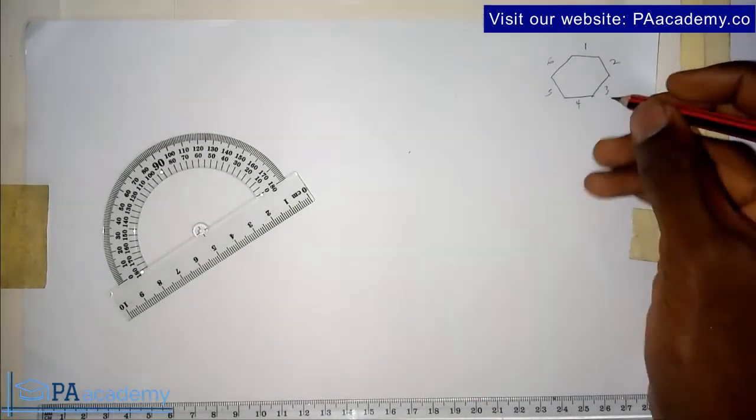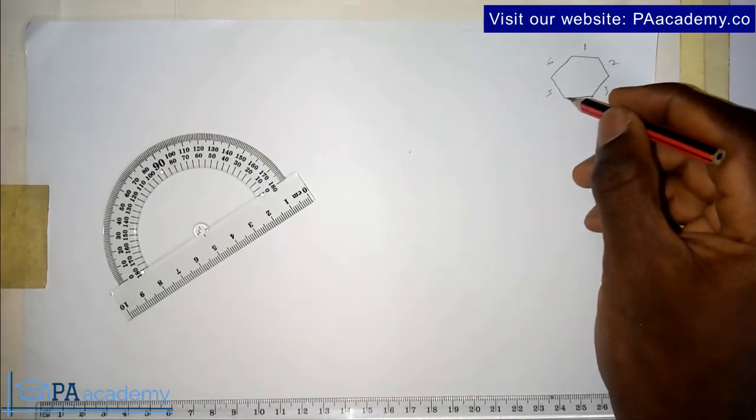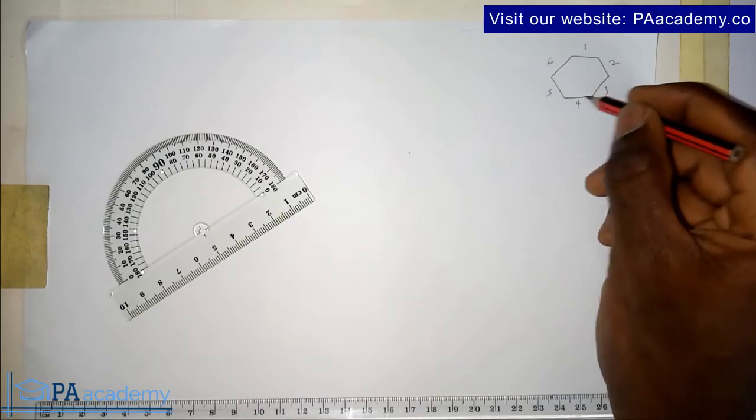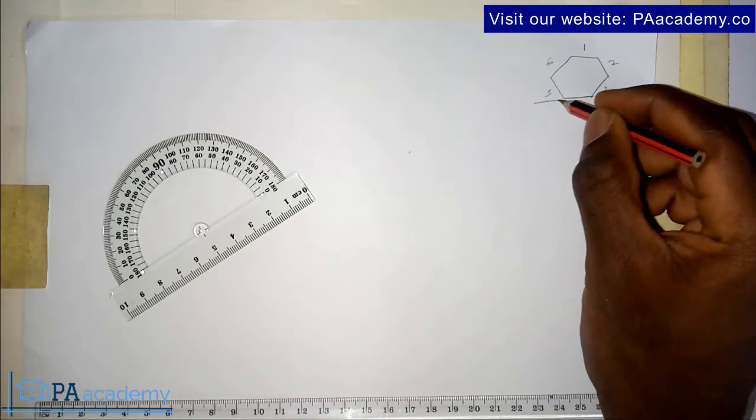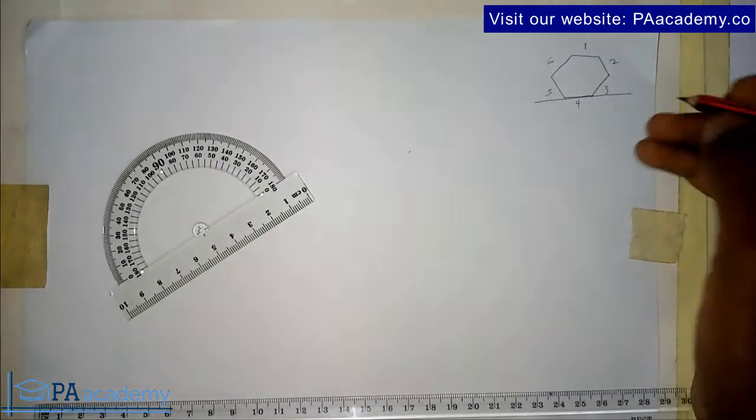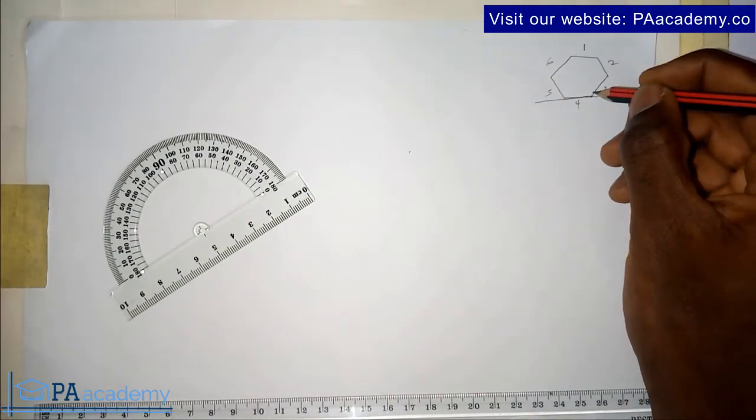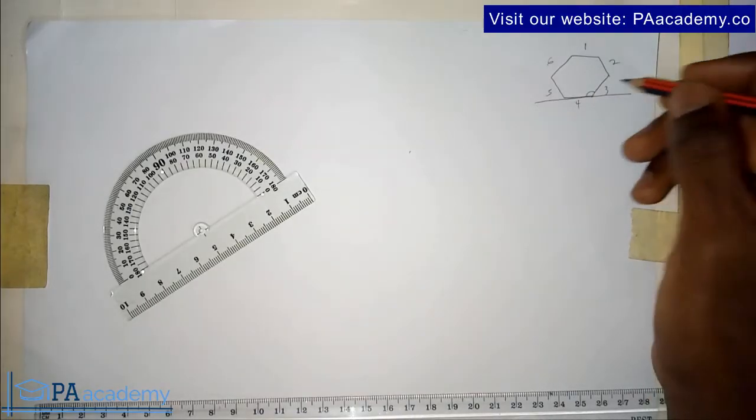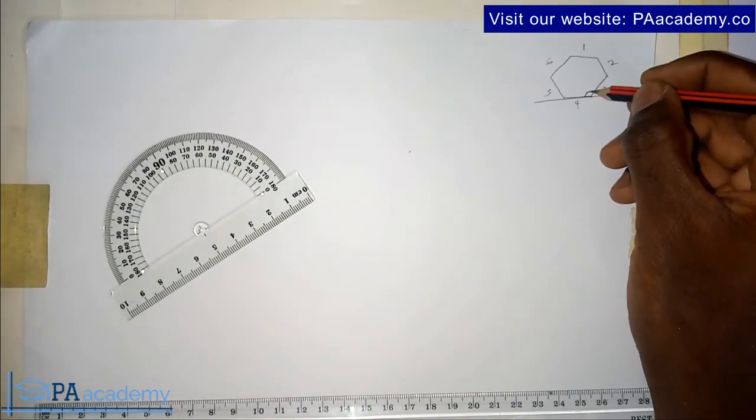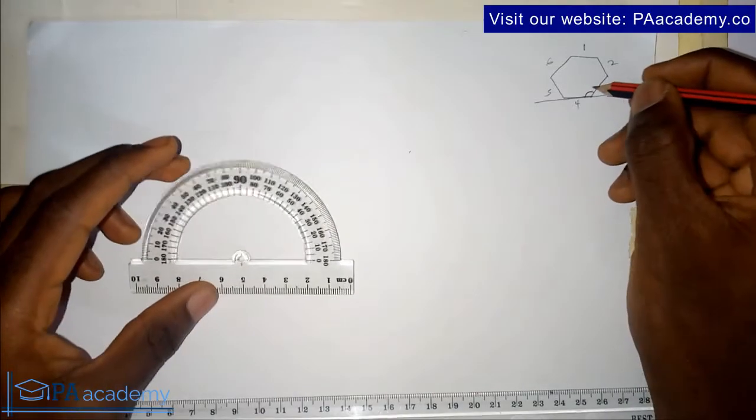The concept is very simple. Using this as an example, what you just need to understand is that if I should extend this base, we just have to make sure that this angle - remember the angle on a straight line is 180 - so you can just use a protractor to measure this angle to give us 120 degrees.